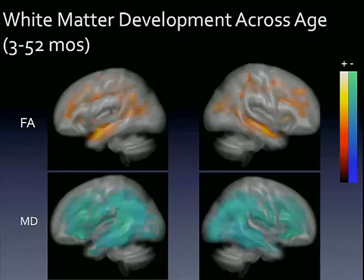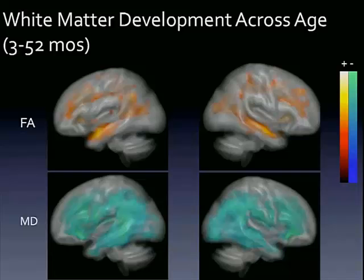In regard to white matter development across this age group, we're basically seeing white matter developing across the whole cortex — a little bit more in the left hemisphere, but really it's happening everywhere. And it's corresponding really nicely with this white matter organization: increases in white matter organization are corresponding really nicely with decreases in diffusivity, so we're seeing greater white matter integrity over time.